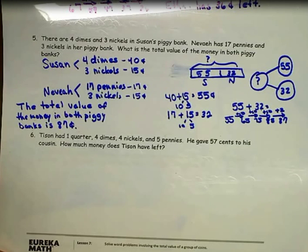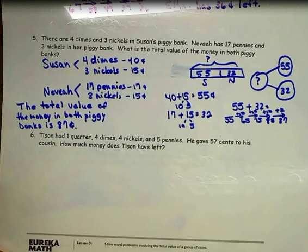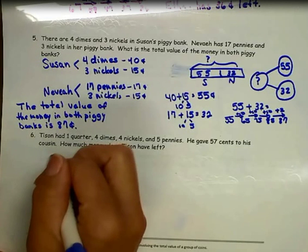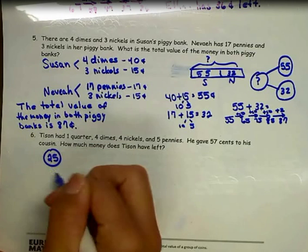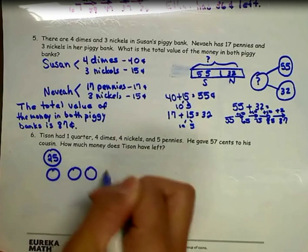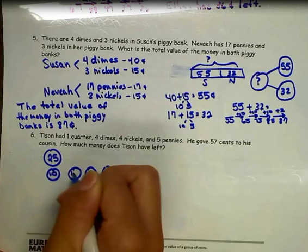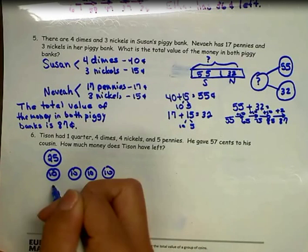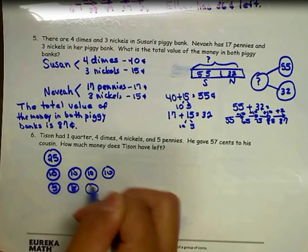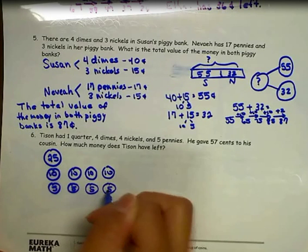Number 6. Tyson had 1 quarter, 4 dimes, 4 nickels, and 5 pennies. He gave 57 cents to his cousin. How much money does Tyson have left? I first need to figure out how much he has in his pocket before I can figure out how much he has left.